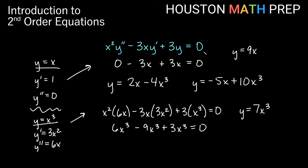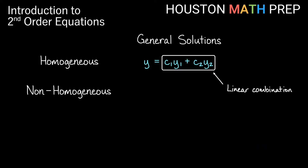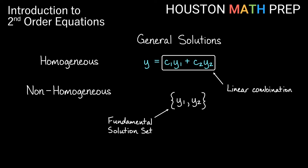When we say a linear combination, we mean our general solution is some constant multiple of x plus some other constant multiple of x cubed. For a linear homogeneous equation, the general solution looks like y equals c1·y1 plus c2·y2 — a constant multiple of one function plus a constant multiple of another. This is a linear combination of y1 and y2, and these two functions are called the fundamental solution set. In our example, x and x cubed were the fundamental solution set, and their linear combinations make up the general solution.